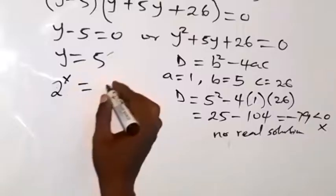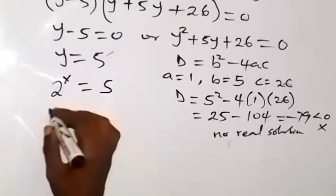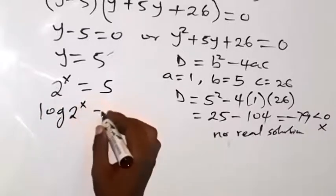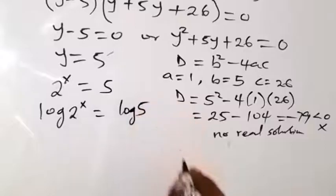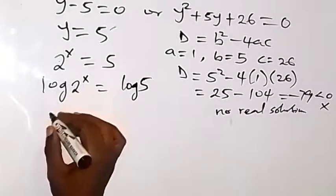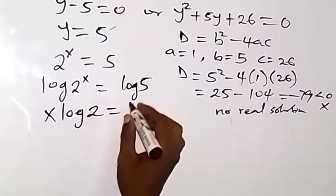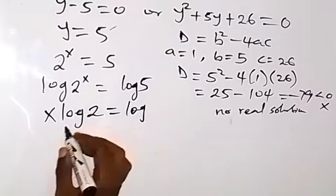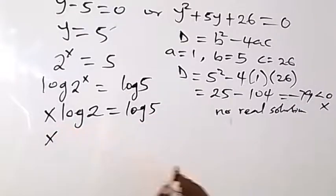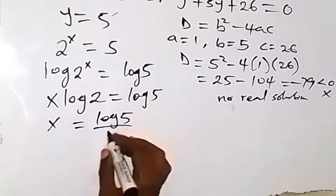Remember, we are finding x. Then we can take the log on both sides. When we take the log on both sides, this is log 2 raised to power x equals to log 5. And from there, we can see that from the laws of logarithms, this x can come to the back here. This will be x log 2 equals to log 5. And by the time we divide both sides by log 2 to get our x, we have x equals to log 5 divided by log 2.